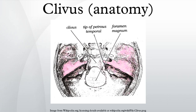Just lateral to the clivus bilaterally is the foramen lacerum, proximal to its anastomosis with the circle of Willis. Posterior to the clivus is the basilar artery. The pons sits on the clivus.